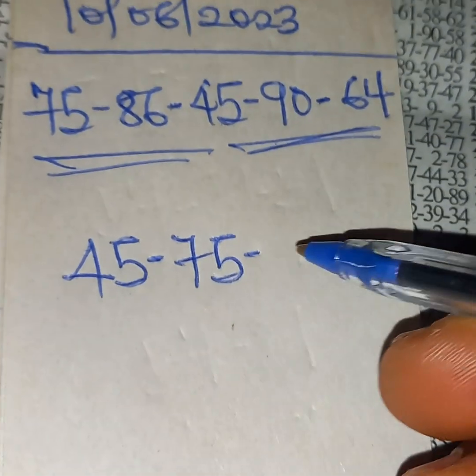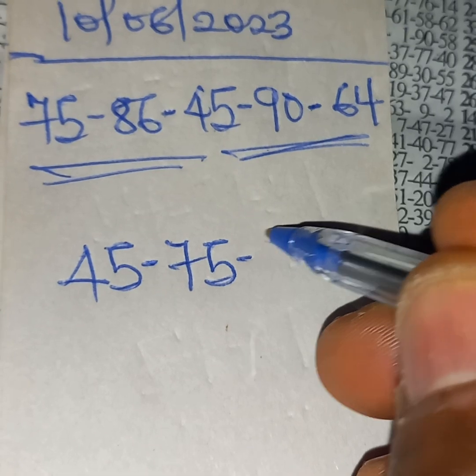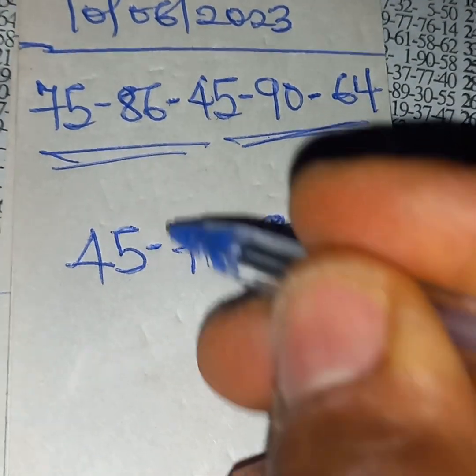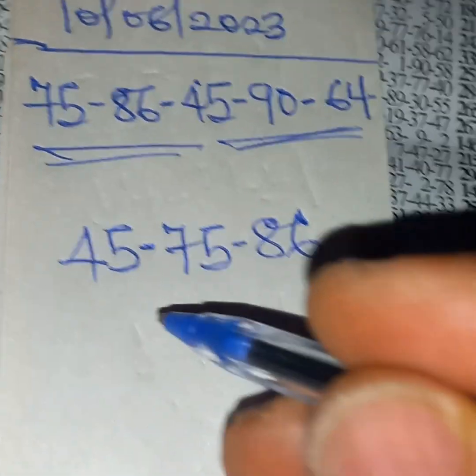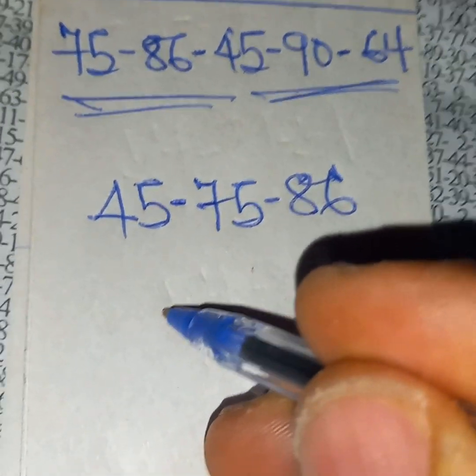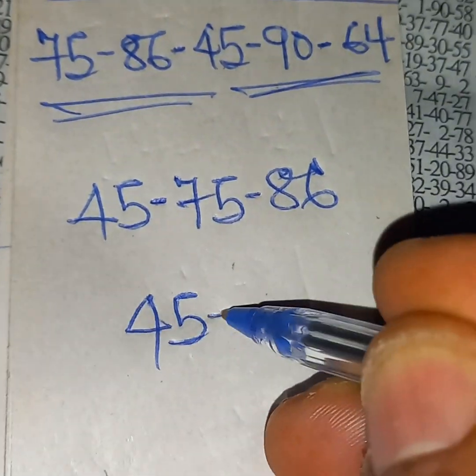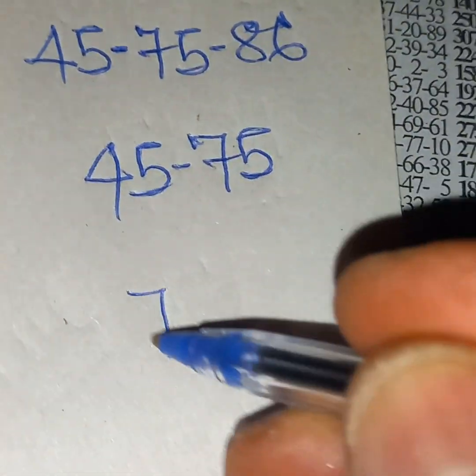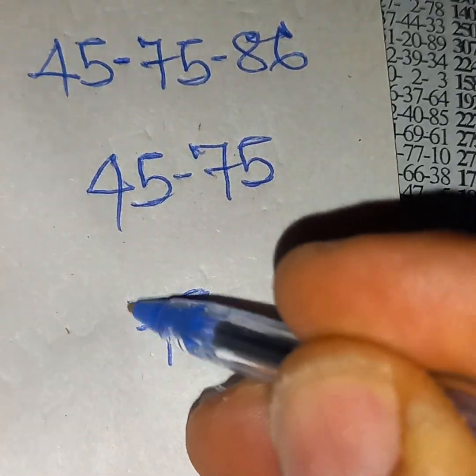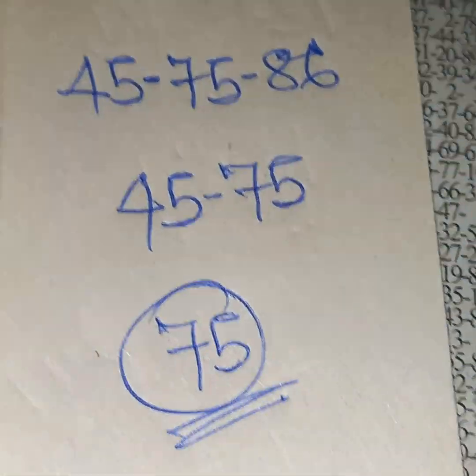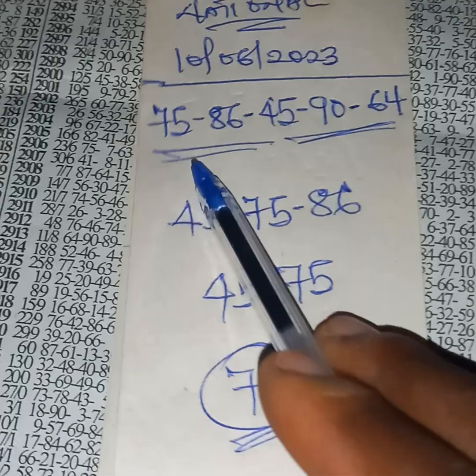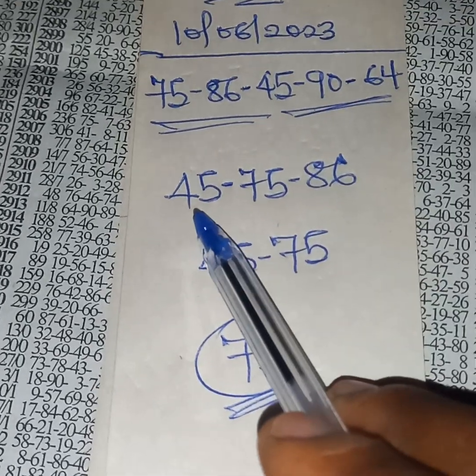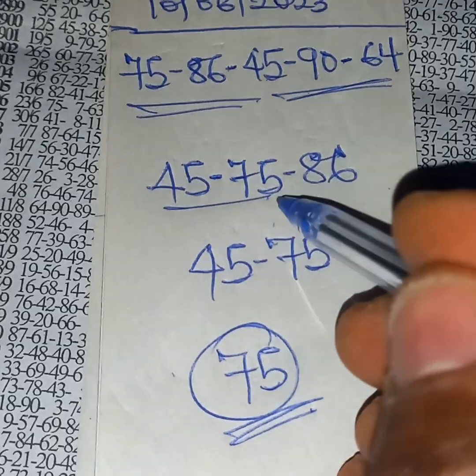After that 45, 75, 86 is our best three. Then 75 is our two sure, 75 is our banker. So 75, 86, 45, 90, 64. Five numbers to pem: 45, 75, 86, 90, 64.